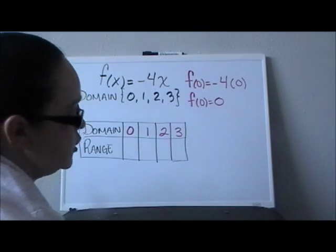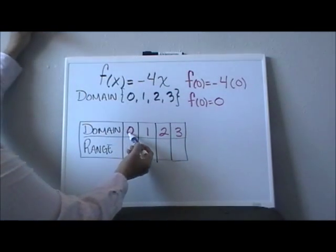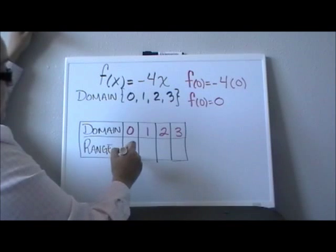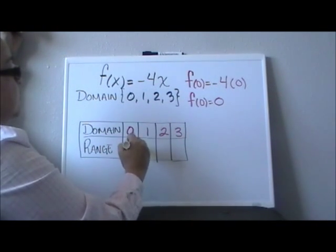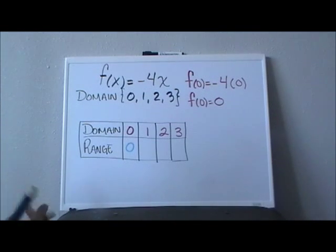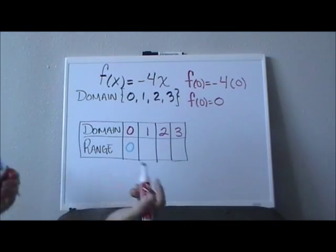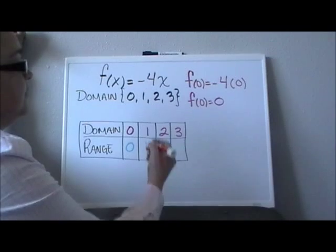So right here in my t-chart, when my x is 0, I know that my range, the value of my dependent variable, will be 0. Now how do I find the rest of them? Very simple. I evaluate the function again.